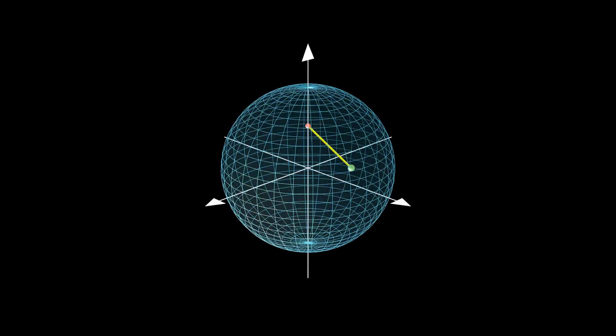In other words, to map mixed states to the Bloch sphere, we simply map the state to the corresponding convex combination of the two pure states that compose it. Since spheres are convex, this means that all mixed states are located in the interior of the Bloch sphere.